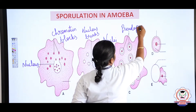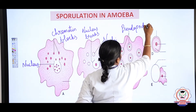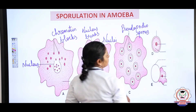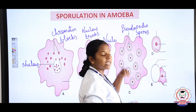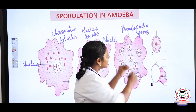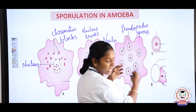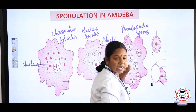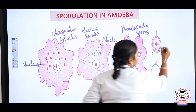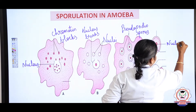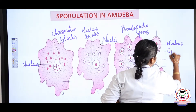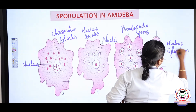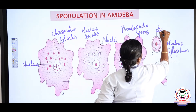These are called pseudopodia spores. When favorable conditions return, the spore case breaks, the amoeba wall breaks, and individually each spore is liberated. This is the spore. The nucleus and cytoplasm are visible, along with the spore case.